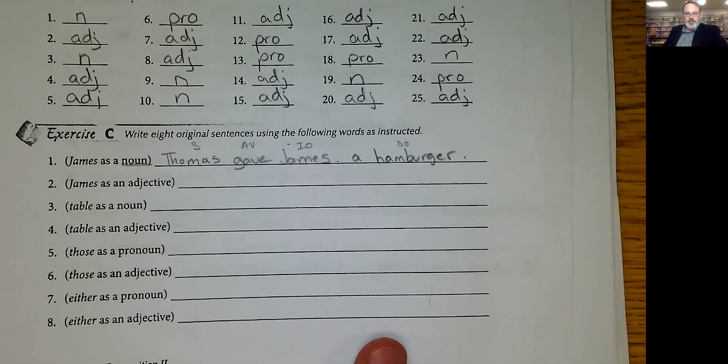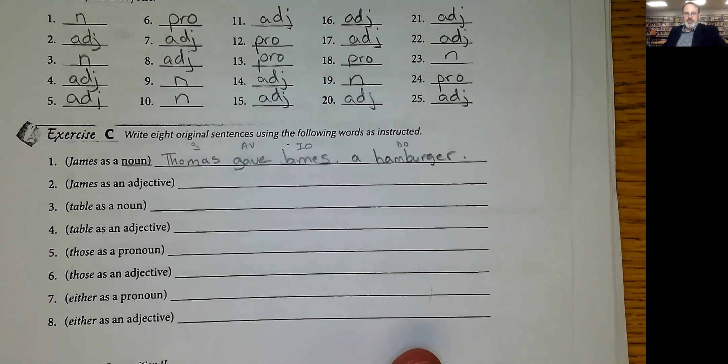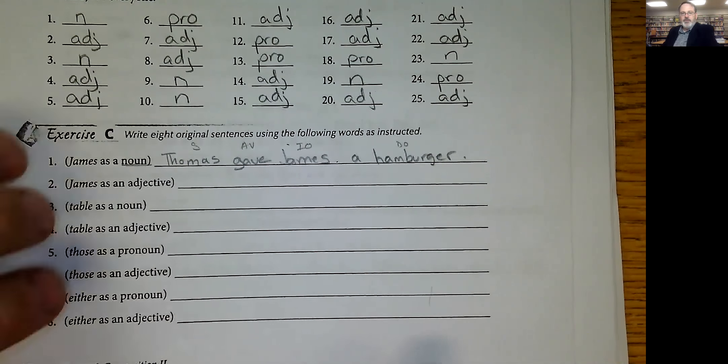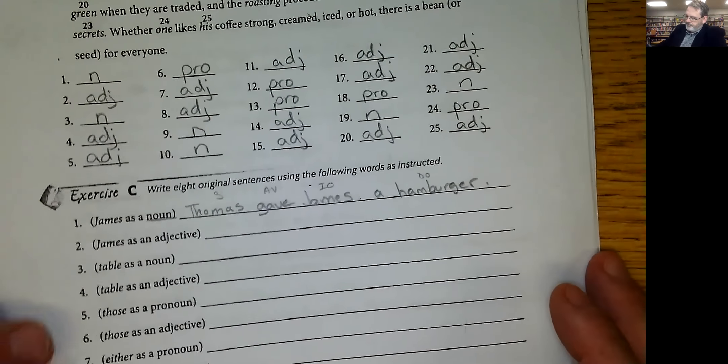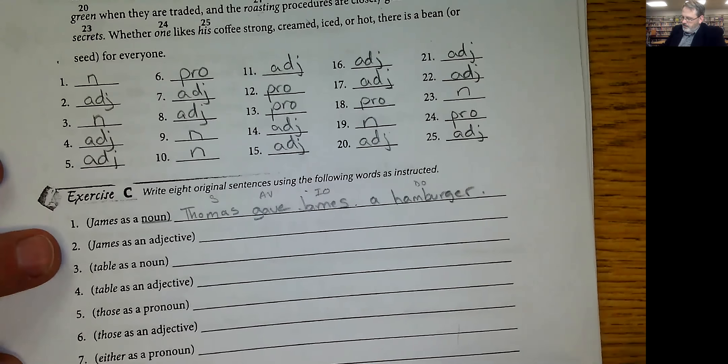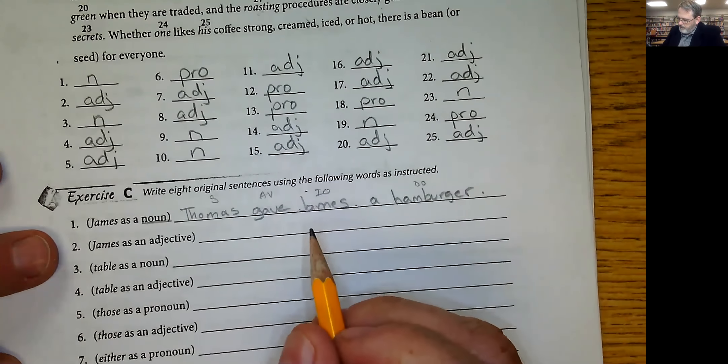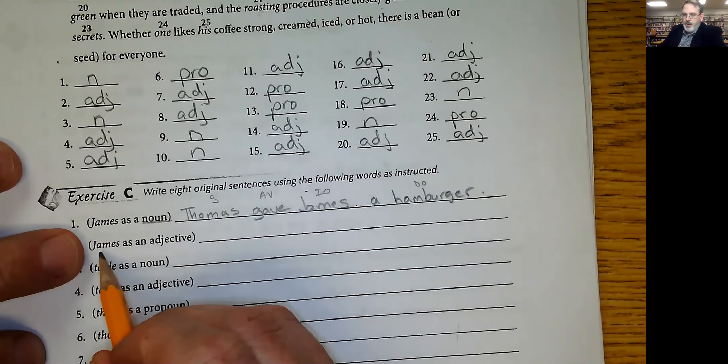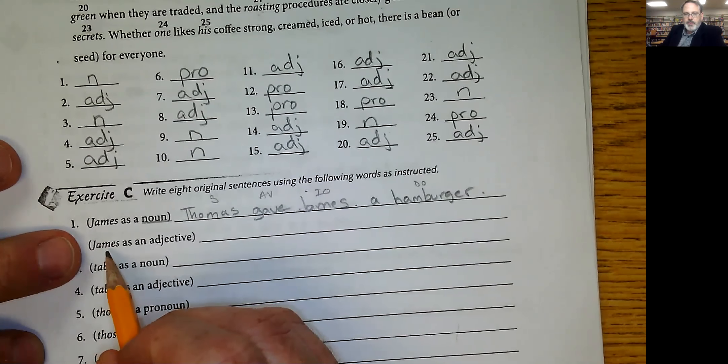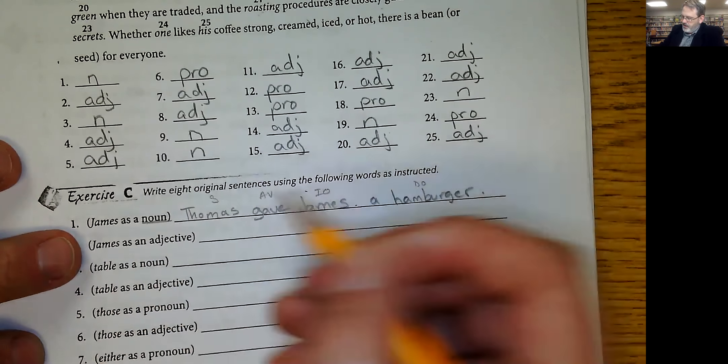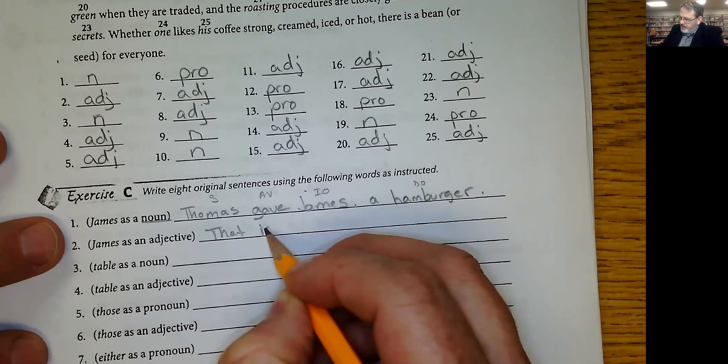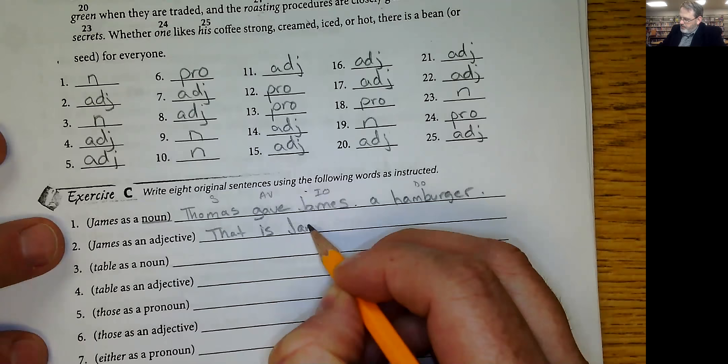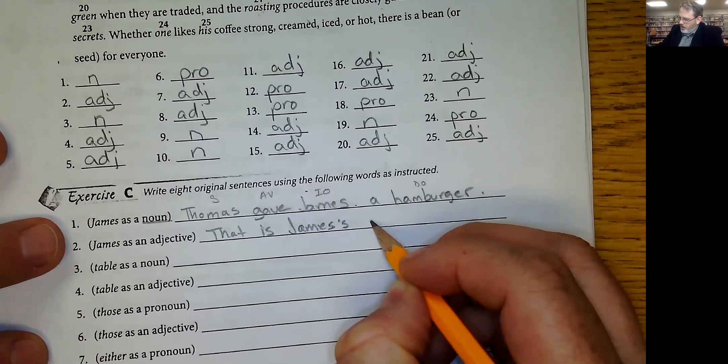Now write eight original sentences using the following words as instructed. Okay, well I'm going to write some, yours will be different. James as an adjective. Let's see, we'll have to use whose, which one, what kind, how many, how much, whose. So James's. Let's see, that is James's dog.